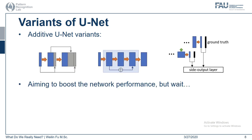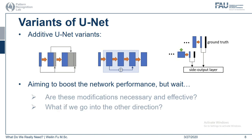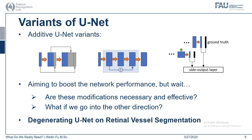All these modifications aim to boost the network performance, but we propose two questions accordingly. The first one is: are they necessary, or how effective are the modifications? And the second one is: what if we go in the other direction? What if we simplify the network rather than making it more complicated? And how badly would the simplification harm the network performance? That leads us to the topic of this work: Degenerating UNET on Retina Vessel Segmentation.